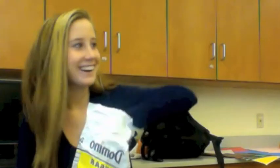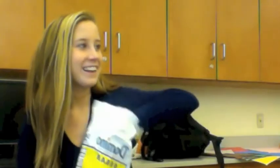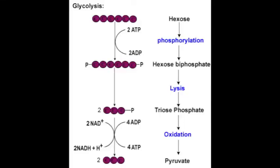Hey Luke, hey Virginia. Glycolysis is happening all the time, everybody. Glycolysis is the process of breaking down a six-carbon sugar into two three-carbon sugars, or two pyruvates.